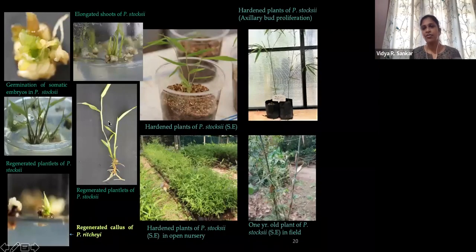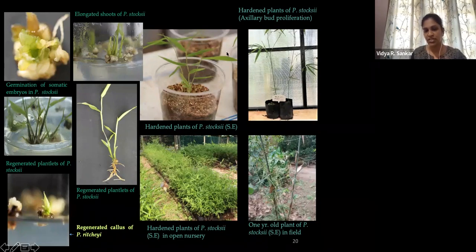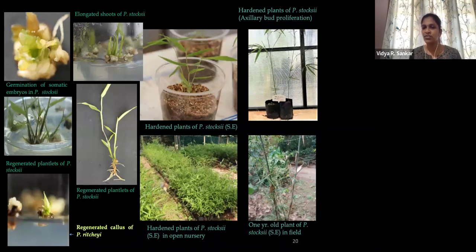These are photographs of the regeneration in different stages. The last one shows embryogenesis and regenerated plants of ritchiei, but they wouldn't grow further. These are photographs of one-year-old stocksii plants raised from somatic embryogenesis growing in the field.